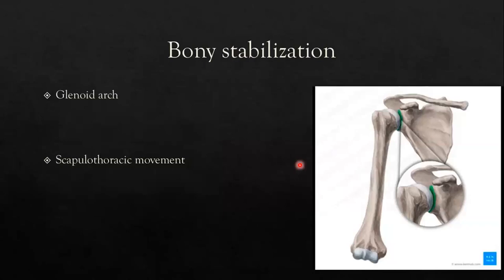An important concept for bony stabilization is the glenoid arch — the entire glenoid surface formed by the glenoid cartilage, underlying bone, and labrum, where the humerus rests. If this arch decreases for any reason, the chances of dislocation increase as the neck reaction force may be directed away from the glenoid. Glenoid retroversion can also increase the risk of instability. Scapulothoracic movement is a key factor in obtaining broad range of motion with the humerus aligned with the glenoid. If the glenoid does not follow the humerus during motion, especially in abduction, the humeral head can shift away from the glenoid center, increasing the risk of instability.